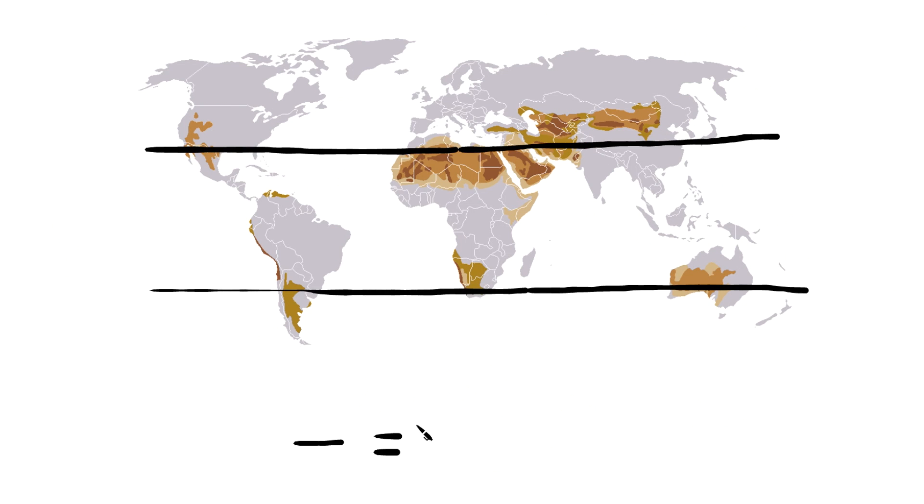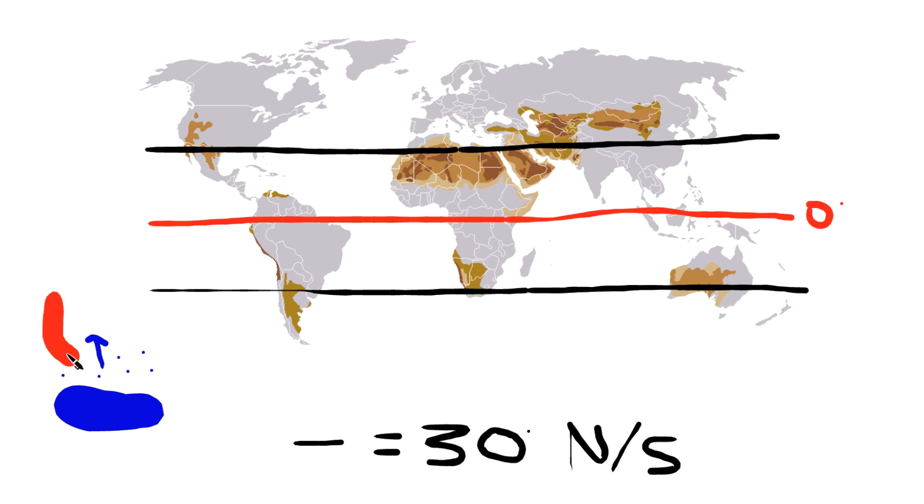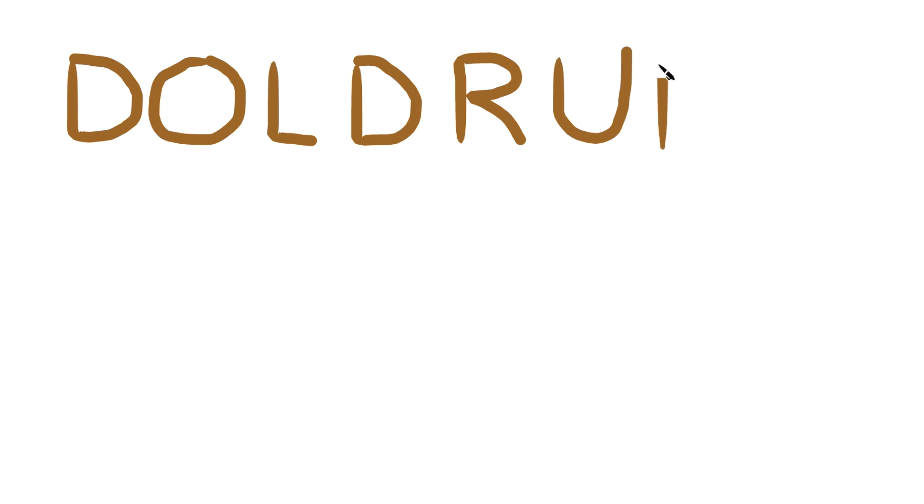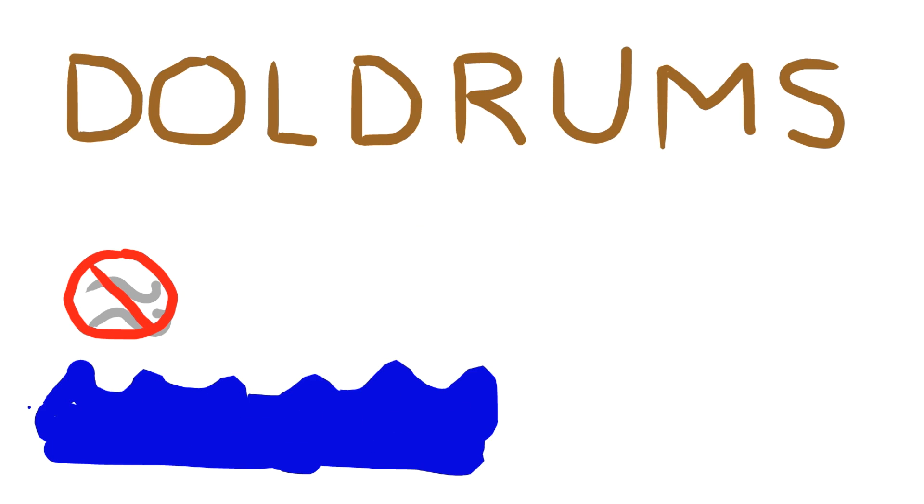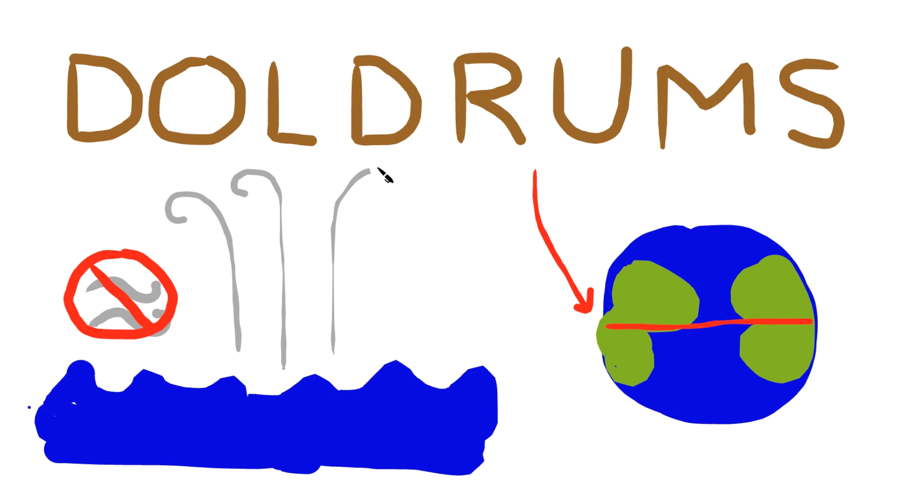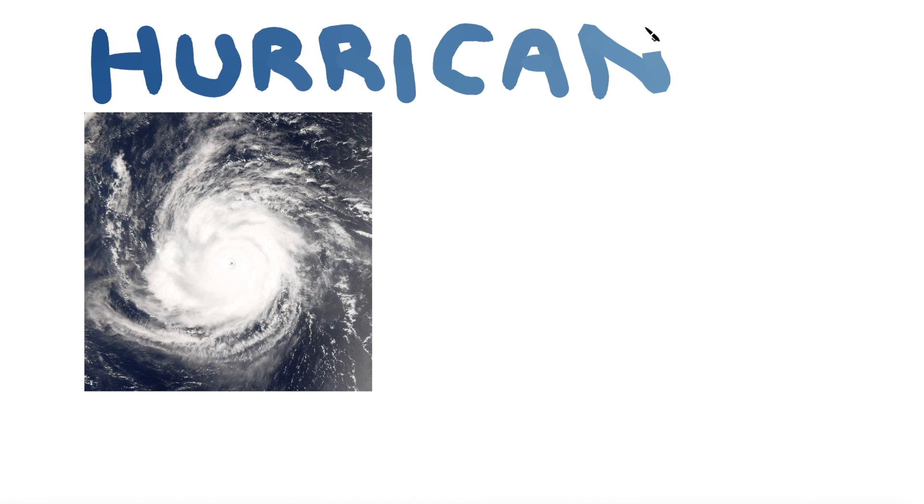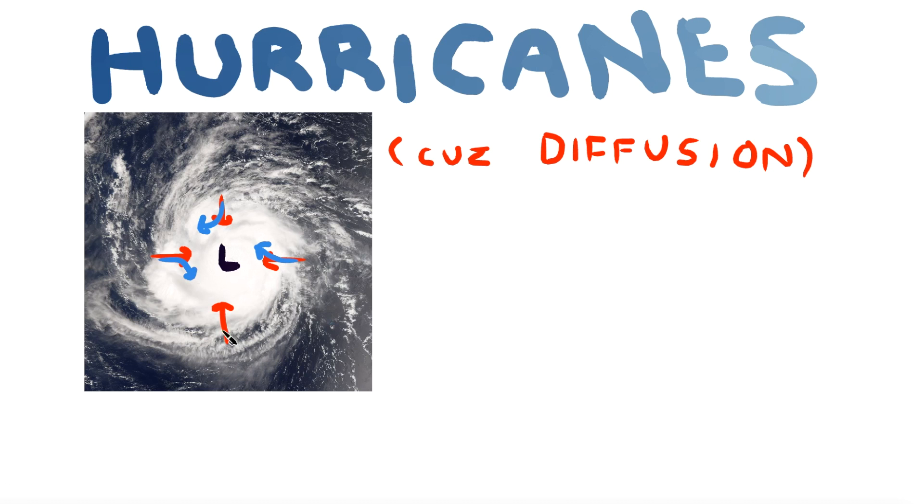It shows why almost all deserts are located at 30 degrees and not near the equator because the high pressure sinking air there stops or at least slows the water cycle. It shows why the doldrums, an area of the ocean with almost no wind, is located near the equator because the air there rises. It explains how hurricanes are formed, when winds diffusing towards a low pressure area are deflected due to the Coriolis effect.